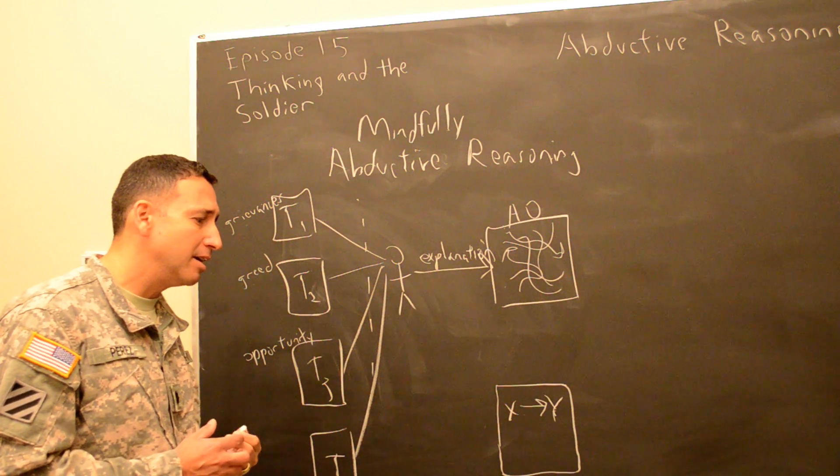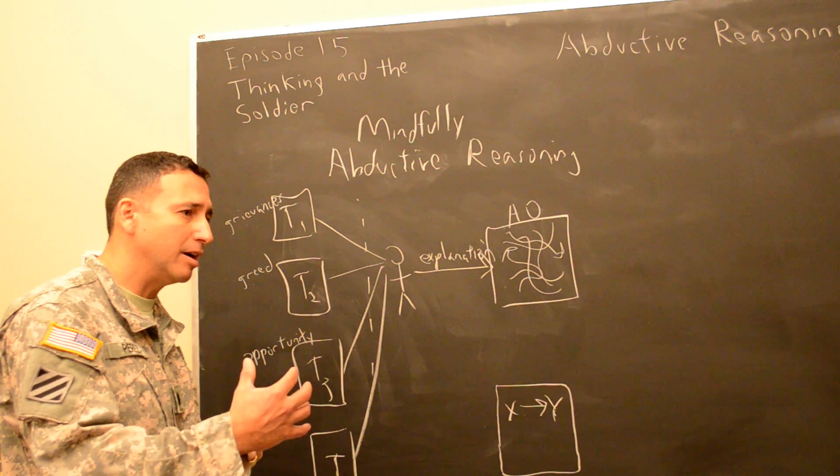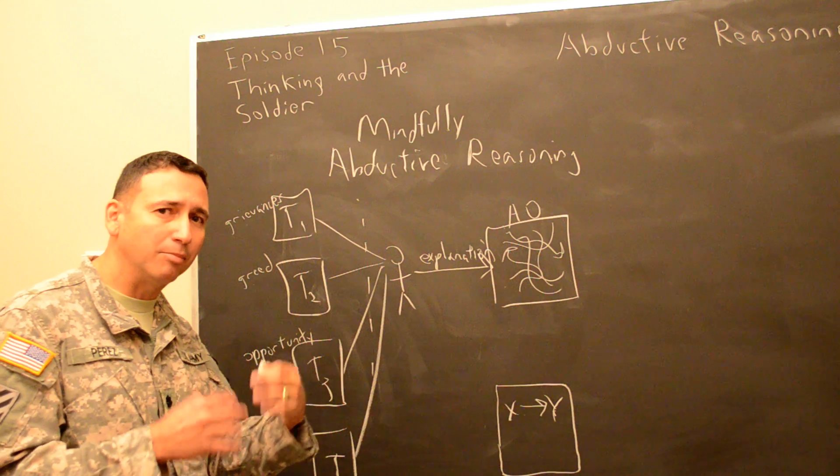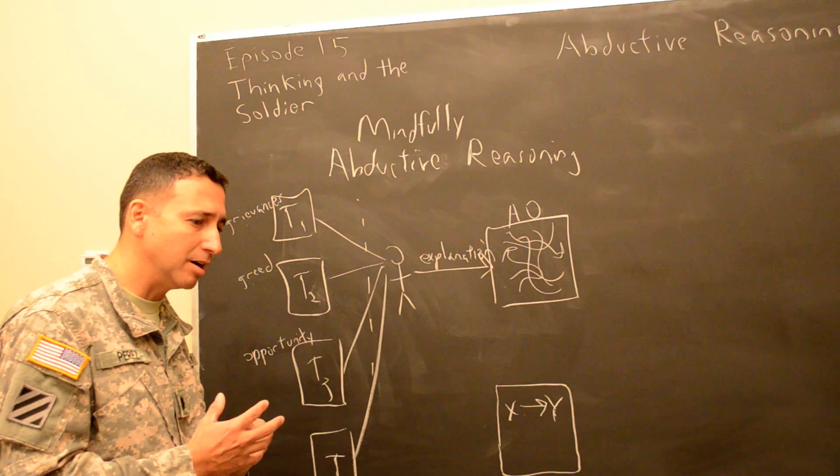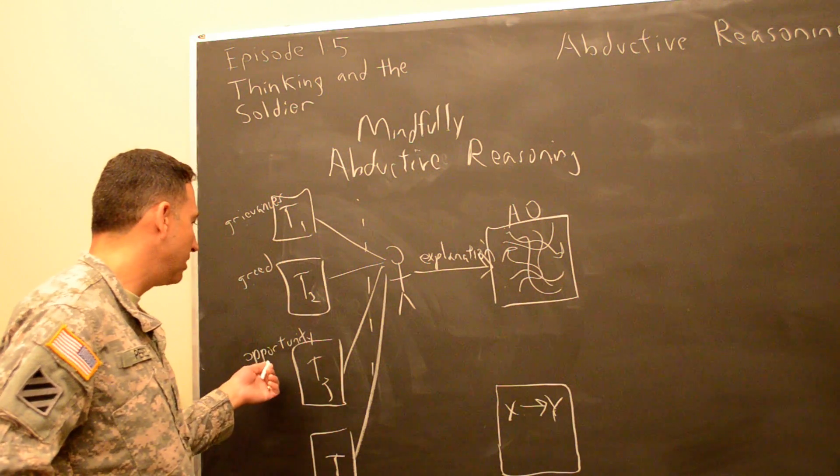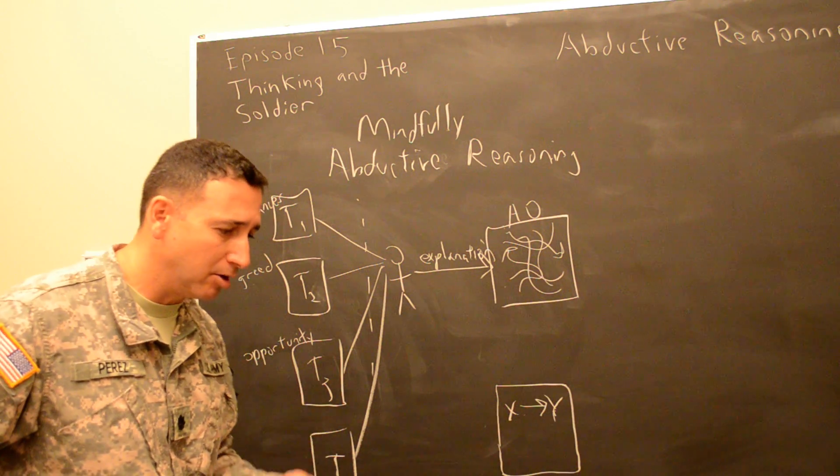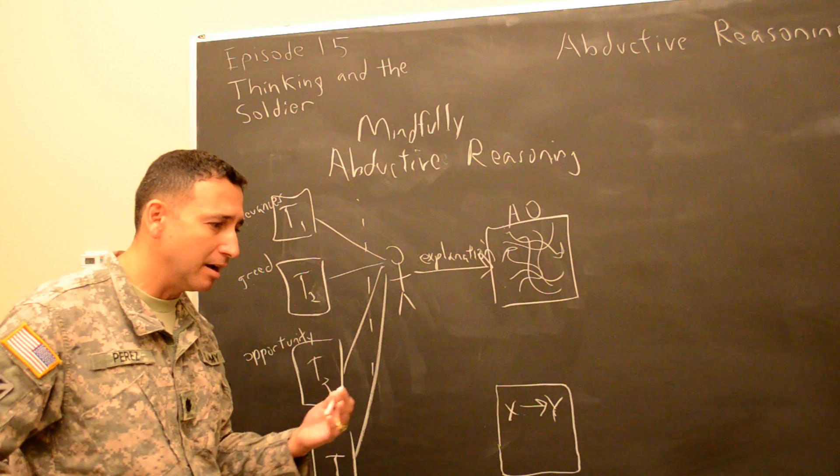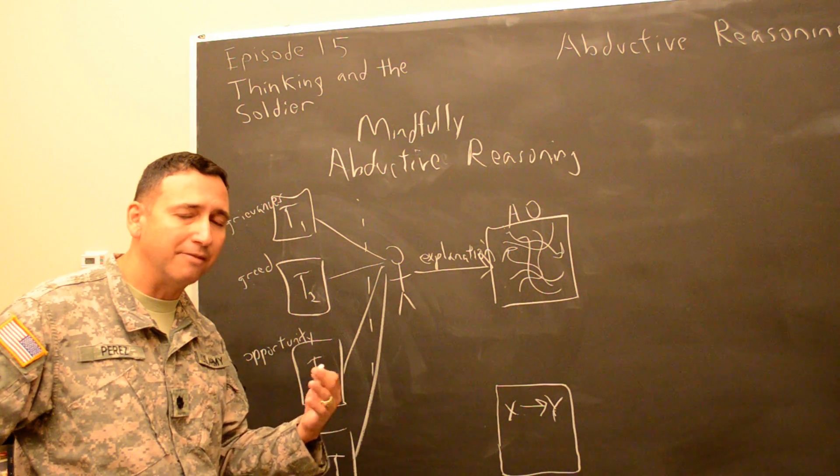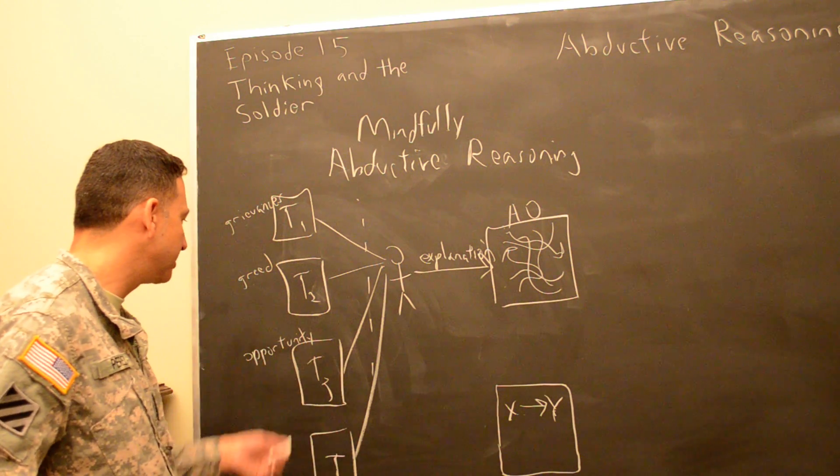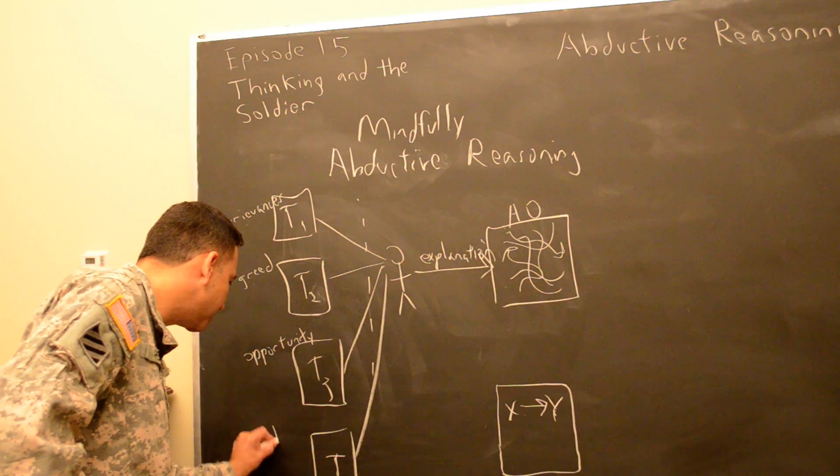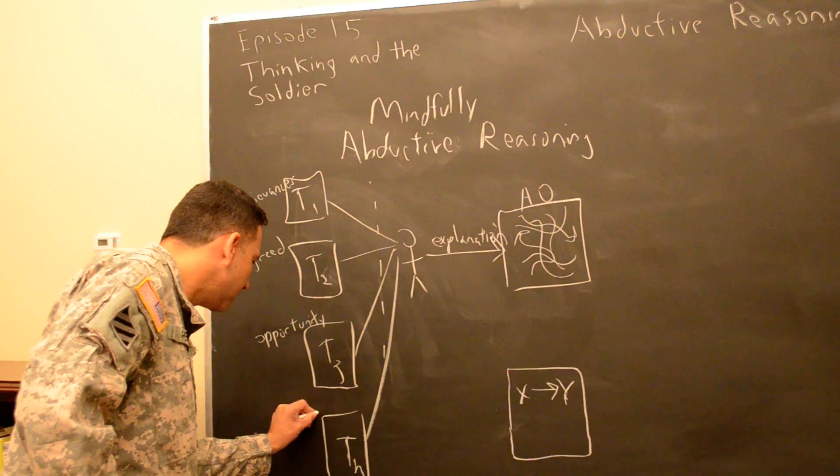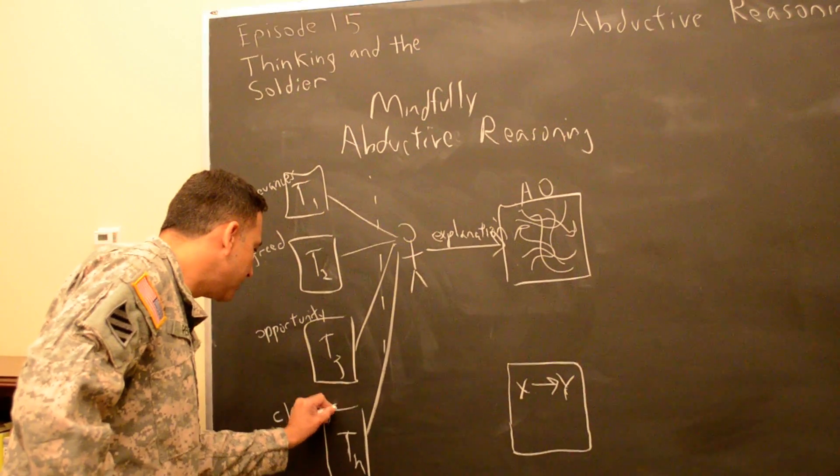So is there a terrain where a rebellion can hide out, plan operations, conduct operations, and come back to and refit? Well, if you're in an archipelago or in mountainous terrain, the theories show that you're more likely to have rebellions. So there's a whole other set of theories here. And then you have another set of theories that talk about cleavages.